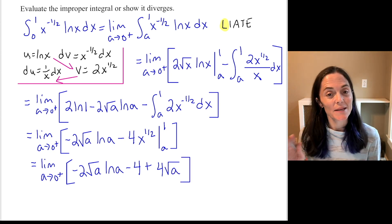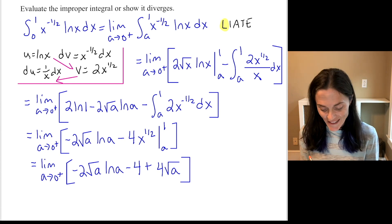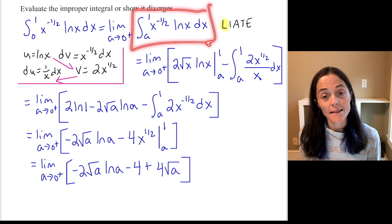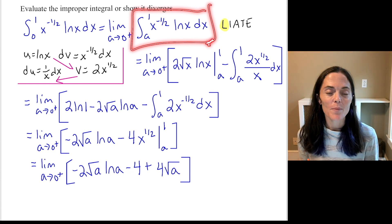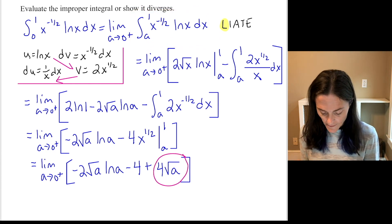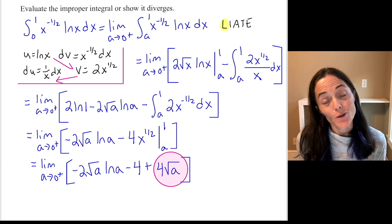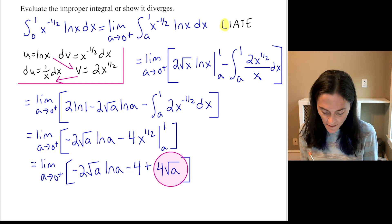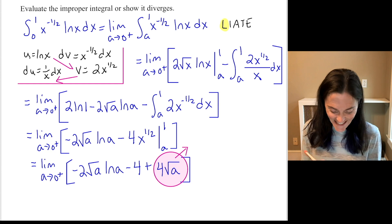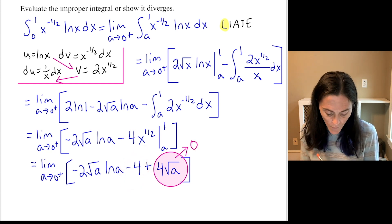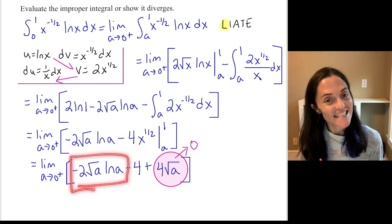Now I have computed a definite integral. I have computed this. The last thing to do is calculate this limit. We will know if the improper integral converges or diverges. So here, 4 square root of a as you approach 0. Well, this goes to 4 times 0, which is 0. This doesn't have an a in it. But then we have to think about this one. And this is the challenge here.